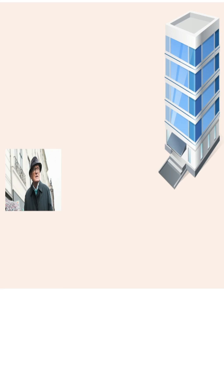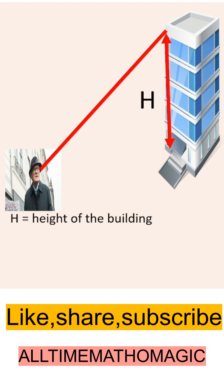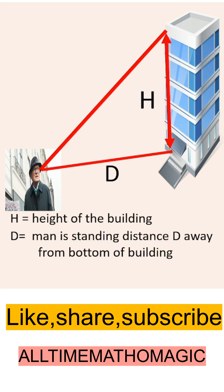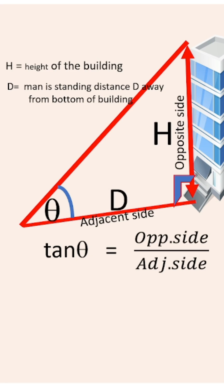Suppose the man is observing the top of the building of height H, standing at a distance D away from the bottom of the building, observing the top of the building at an angle θ. tan θ equals opposite side upon adjacent side.